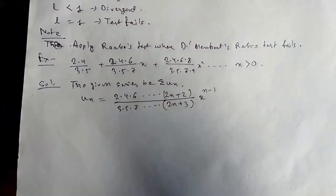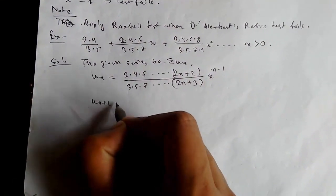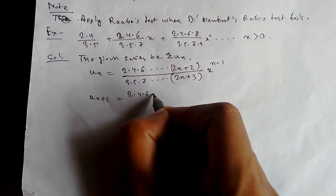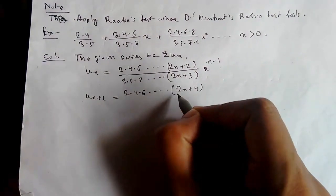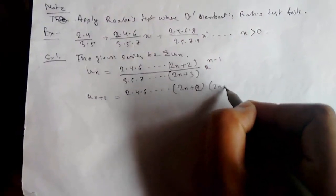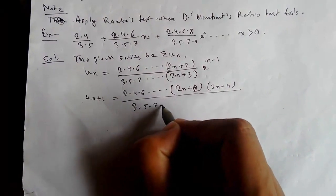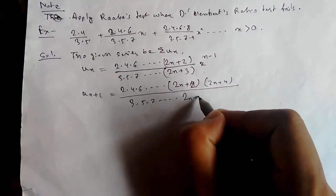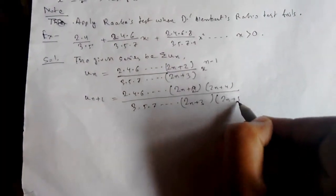Now x is increasing as 0, 1, 2, so x to the power n-1. These are UN. So now we need to find UN+1. This will be (2n+2)(2n+4) in the numerator, and in the denominator (2n+3)(2n+5), times x to the power n.